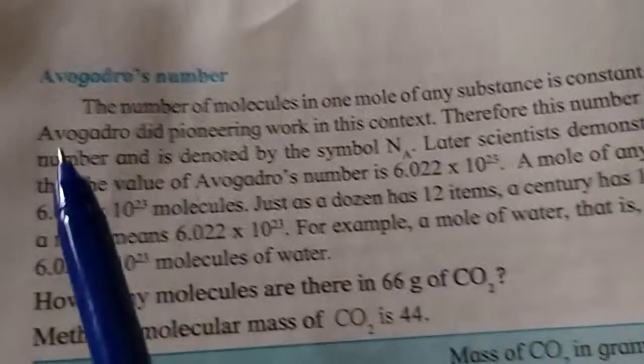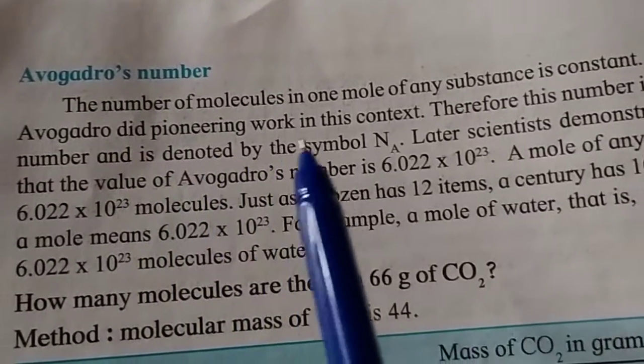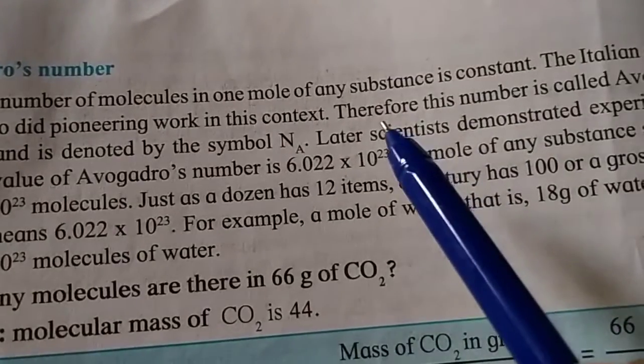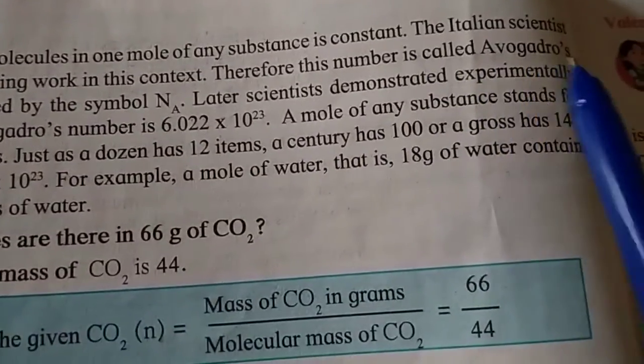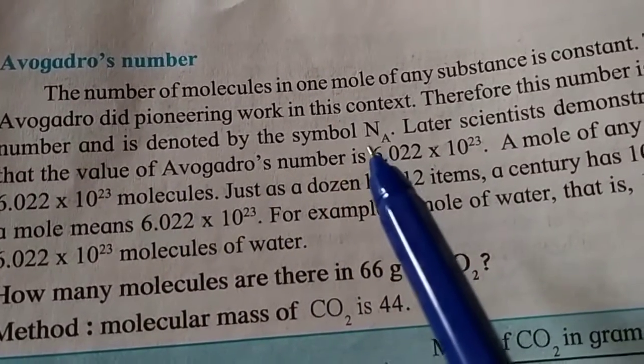The Italian scientist Avogadro did pioneering work in this context. Therefore, this number is called Avogadro's number and is denoted by the symbol NA.